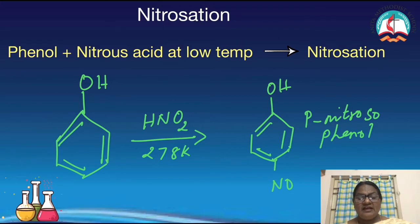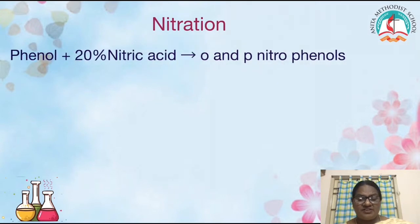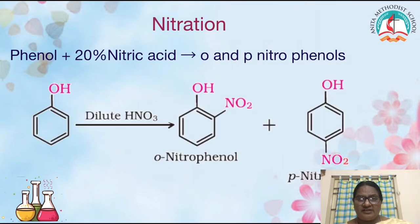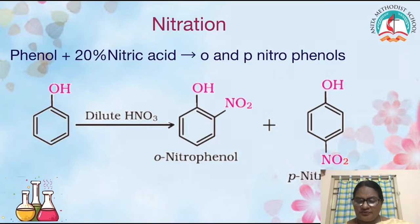Next, let us see nitration. Phenol is treated with 20% nitric acid where the ortho and para isomers are formed. Phenol on treatment with dilute nitric acid (20% HNO3) gives ortho-nitrophenol and para-nitrophenol. In the ortho isomer, both substituents are adjacent to each other at the 1 and 2 position. In the para isomer, both are opposite to each other at the 1 and 4 position.